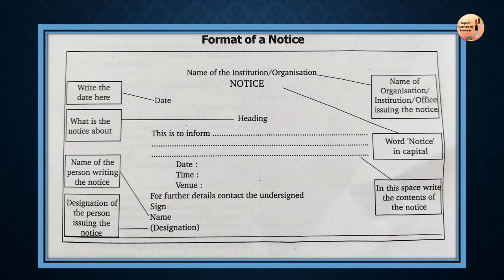We write the date as day, month, and then year. Suppose your examination is in the month of March on the 1st, so you will write 1st March 20XX or whatever year you are appearing. After the date is done, we focus on the heading. The heading should be really catchy and should introduce the subject of the notice. After the heading is done, you start writing the main body of the notice, which will include date, time, and venue.